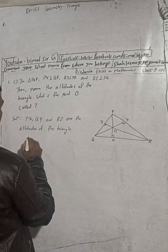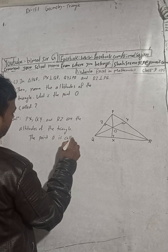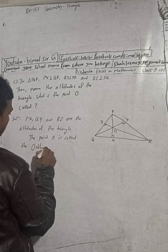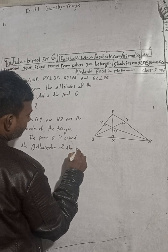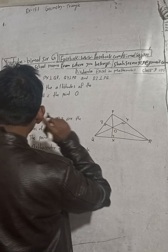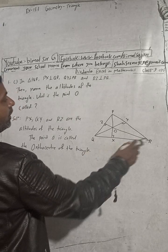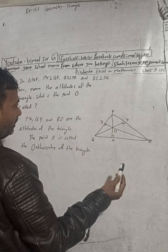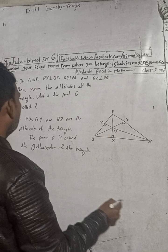Point O is called the orthocenter of the triangle. The meeting point of the altitudes of the triangle is called the orthocenter. So where all the altitudes meet, that point is the orthocenter.